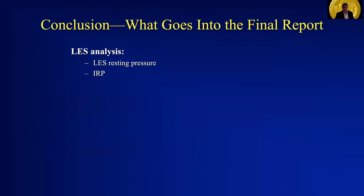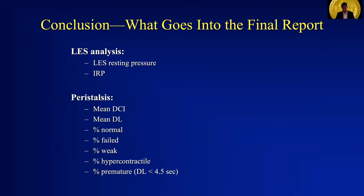So what goes into the final report? This varies by center, but what I like to include is LES analysis — especially the LES resting pressure and the IRP. Oftentimes people will include the proximal border of the LES, which gives an estimate of the overall esophageal length, as well as whether or not you see a dual high pressure zone, which is associated with hiatal hernia. And then an analysis of peristalsis: the mean DCI, mean distal latency, and those percentages of contractions which are normal, percent failed, percent weak, percent hypercontractile, and percent premature.